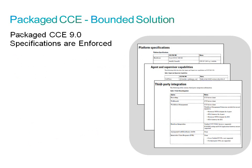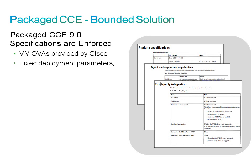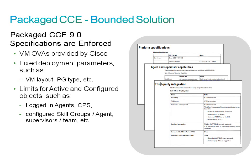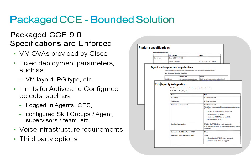Package CCE includes required specifications which are enforced. These include the use of OVAs when creating virtual machines, fixed deployment parameters such as VM layout and PG types, limits for active and configured objects, voice infrastructure, and third-party options. The specifications are important and allow Cisco to provide a stable, efficient, all-in-one contact center solution. These specifications also allow for a very consistent deployment among all customers, which allows for quicker resolutions when problems are encountered.